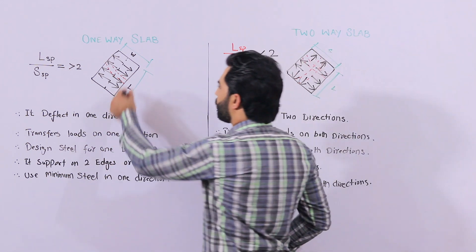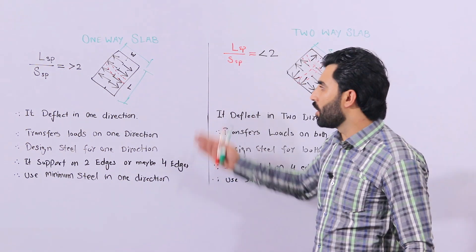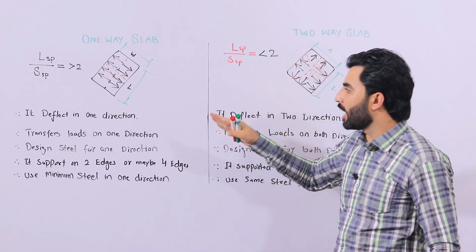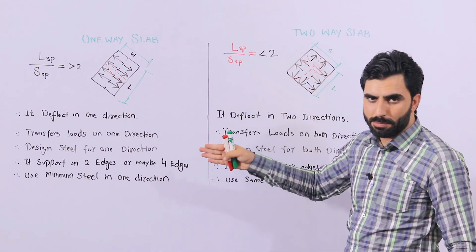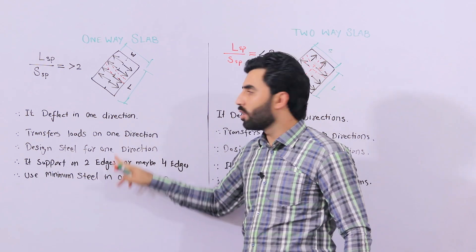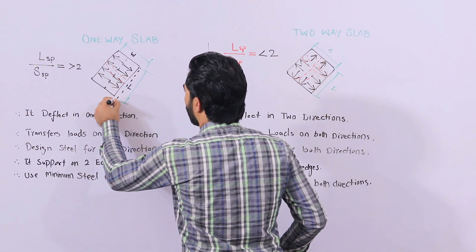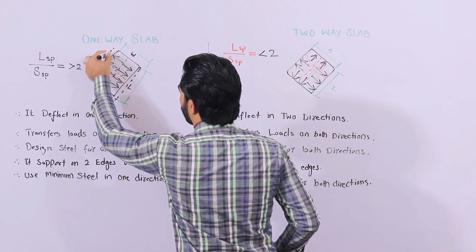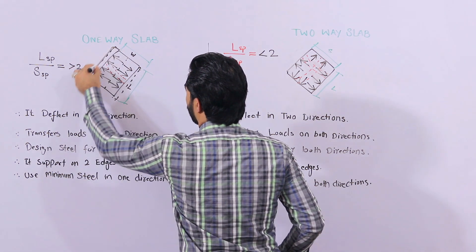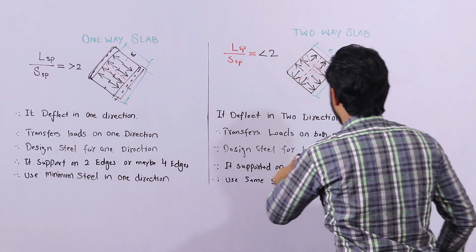At support, one-way slab is supported on two edges. It means on one side we provide the beams, especially for the longer direction. So it is supported on two edges — one on this side and the second one on this side, like this.